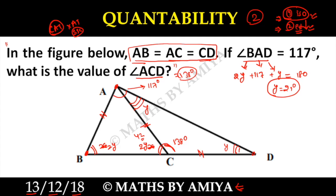So that is the concept. Generally we start from a figure where we have an isosceles triangle and then use the exterior angle. Alternatively, you can assume angles X and X for one triangle and Y and Y for the other, make two equations, solve them, and get the answer. That is the solution to Quantability 2.